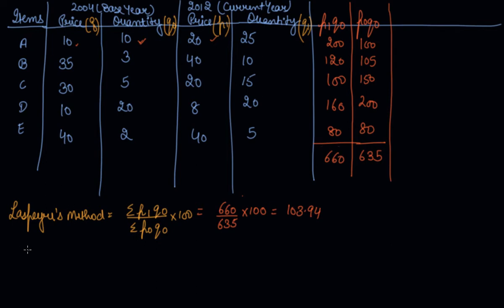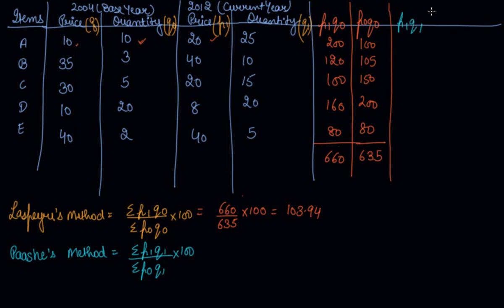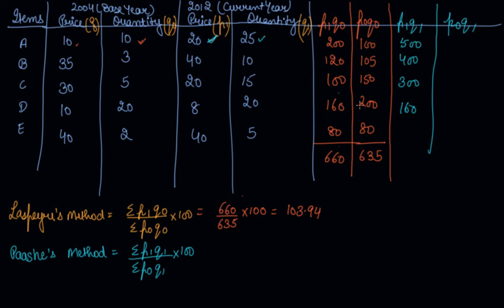Now for Paasche's method, the formula is sigma P1Q1 divided by sigma P0Q1 into 100. We need to find P1Q1 and P0Q1. P1 is 20 and Q1 is 25, so P1Q1 is 500; then 400; then 300; 8 into 20 is 160; and 200. Adding them gives sigma P1Q1 equal to 1,560.